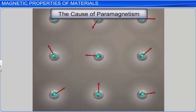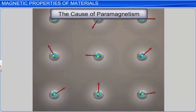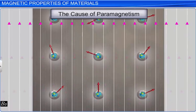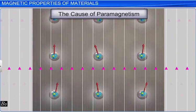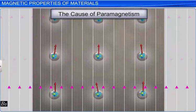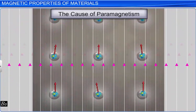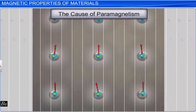But due to random thermal motion of the atoms, the net magnetic moment of the material is zero. When a paramagnetic material is placed in an external magnetic field of induction B0, at low temperatures, the magnetic dipole moment of the individual atoms align in the same direction as that of the external magnetic field.